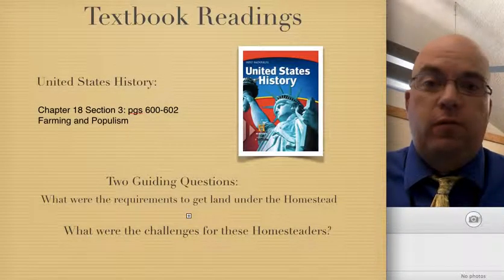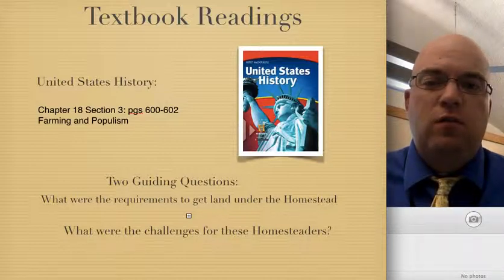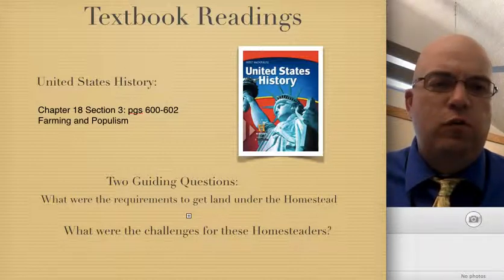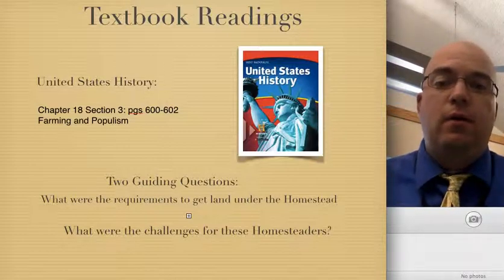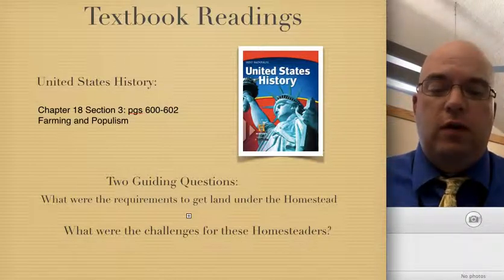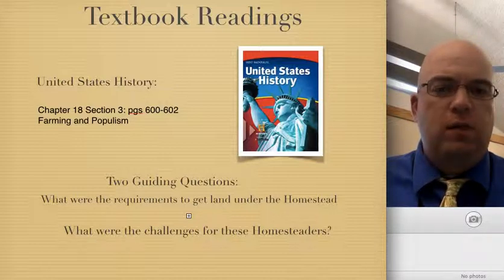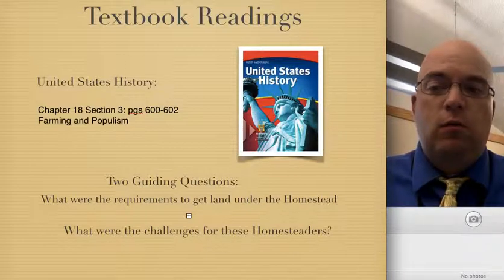The reading for this section comes out of the textbook from Chapter 18, pages 600 to 602. You don't necessarily have to read the entire section. The part that deals with the Homestead Act, which is what we're going to be talking about today, primarily comes from those two pages. Our guiding question today is going to look at what were the requirements to get this land under the Homestead Act, and then what were the challenges for these homesteaders — what were some of the difficulties they had coming here to the West?